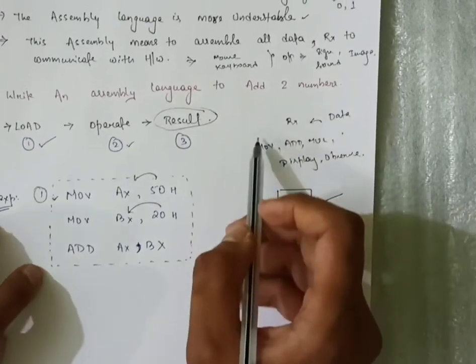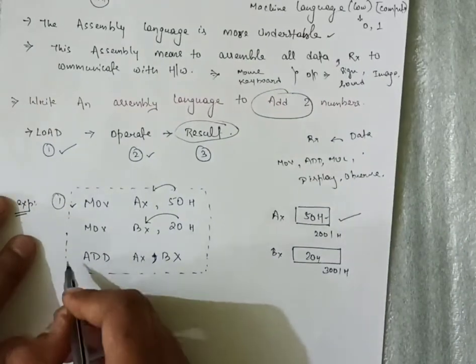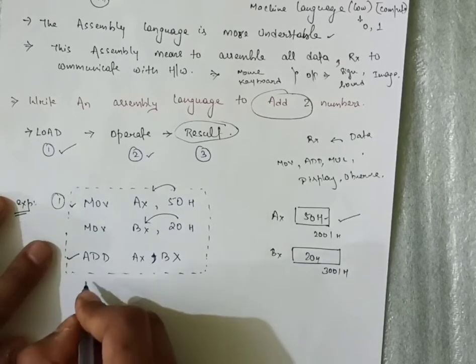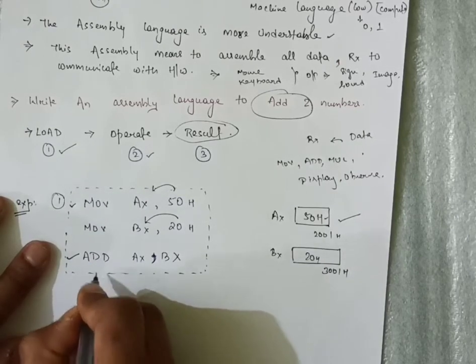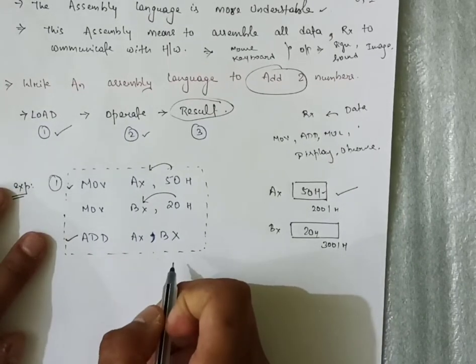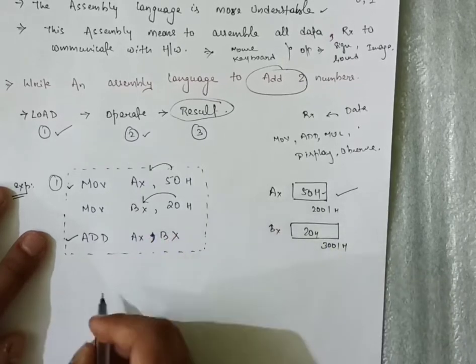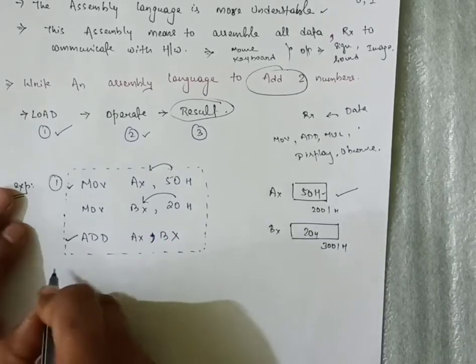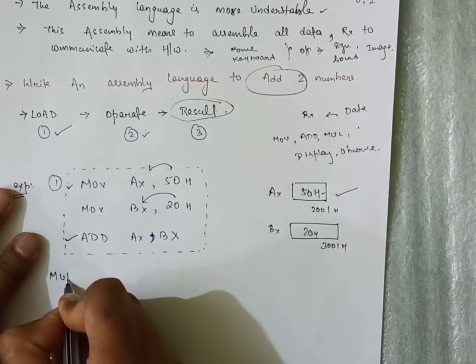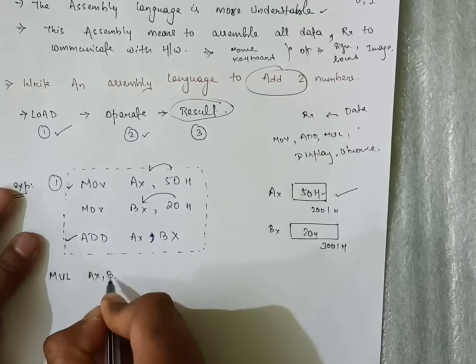Now we want to perform addition of two numbers. What command will we write? Only the addition command. For addition, the command is ADD. Who is going to add right now? AX and BX registers. So we have given the command. Now suppose we had to do multiplication, we would give the multiplication command MUL AX, BX.